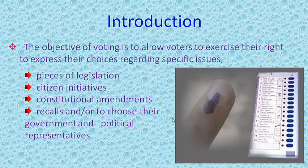The main objective of voting is to allow voters to perceive their rights in order to express their choice regarding specific issues. Technology is being used more and more to assist voters in casting their votes — for things like pieces of legislation, citizen initiatives, constitutional amendments, and choosing the government or political representatives.